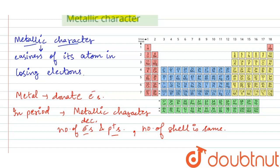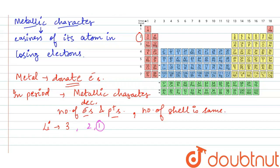Since metallic behavior depends on losing electrons, it becomes difficult for an element when nuclear charge is higher and electrons are more attached to the nucleus. For example, lithium has atomic number 3 with configuration 2,1 — the outermost shell has just one electron, so it is easy to remove that one electron.